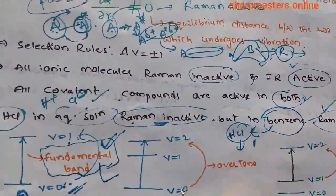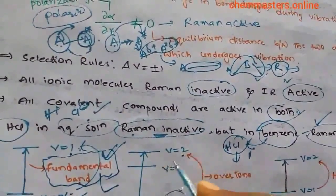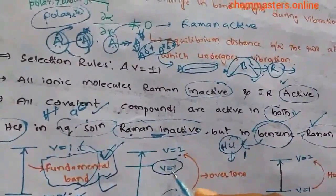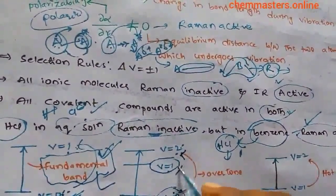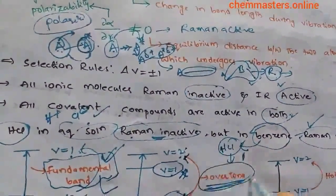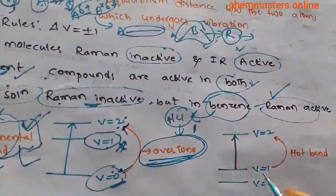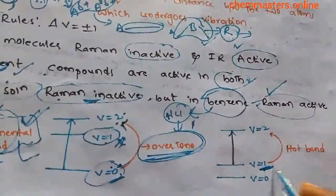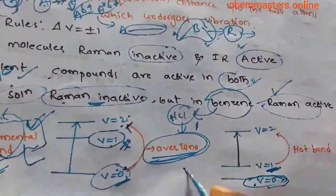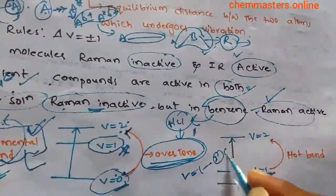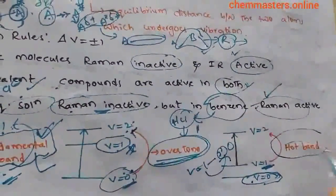An overtone occurs when a molecule jumps from v₀ directly to v₂, bypassing v₁ — going to a higher energy level other than v₁. A hot band occurs when a molecule is excited from v₁ — not from the ground level v₀ — and transitions to another higher energy level.